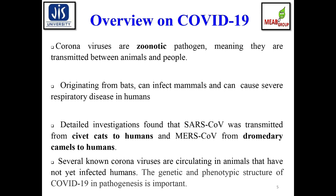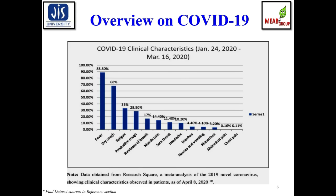Coronaviruses are zoonotic in nature, meaning they are transmitted between animals and the human community. Originating from bats, they can infect mammals and cause severe respiratory disease in humans. SARS-CoV-2 was transmitted from civet cats to humans, and MERS-CoV from dromedary camels to humans. Several known coronaviruses circulating in animals have not yet infected humans.